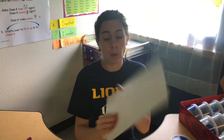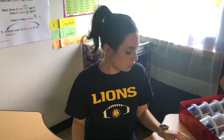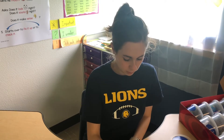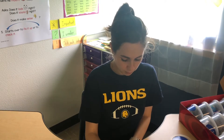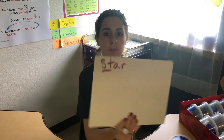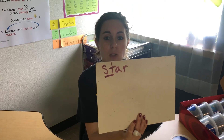Now you can pause the video and get your whiteboard and a marker. Now I'm going to show you the objects and we are going to write the name of the object and underline the chunk. Star — write it on your whiteboard. Don't make it too big and underline the chunk. It should be S-T-A-R. Star.